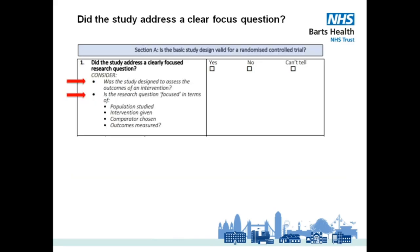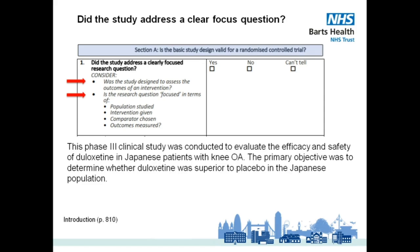Going back to our study, let's now answer the first question of the CASP checklist. The title, abstract, or final paragraph of the introduction should provide the answer. On page 810, at the very end of the introduction, there's a clear statement of the question being addressed in line with the PICO method.